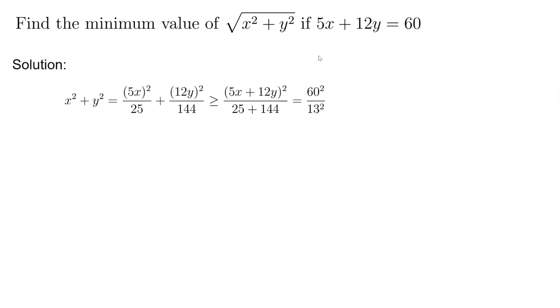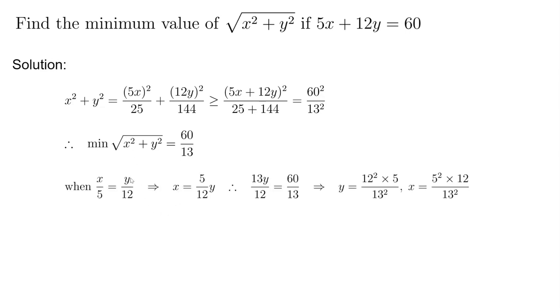Okay and by the condition 5x plus 12y is just 60 so this whole thing is larger or equal to 60² over 13². So the minimum of square root of x² plus y² becomes 60 over 13 and not enough we have to give the value of x, y that can reach this value. So in this case x over 5 must equal to y over 12 so x equals to 5 over 12y plug that into the original equation. We got 13y over 12 equals to 60 over 13. So y is 12² times 5 over 13² x is 5² times 12 over 13².